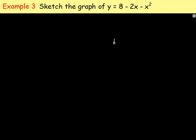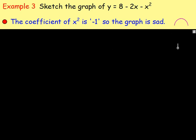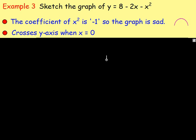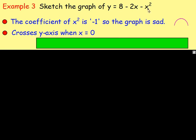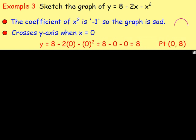Example three: sketch the graph of y equals 8 minus 2x minus x squared. The coefficient of x squared is negative 1, so the graph is going to be a sad face parabola. To find where it crosses the y-axis, let x equal zero: 8 minus 2 times 0 minus 0 squared equals 8. So the y-axis crossing point is (0, 8).